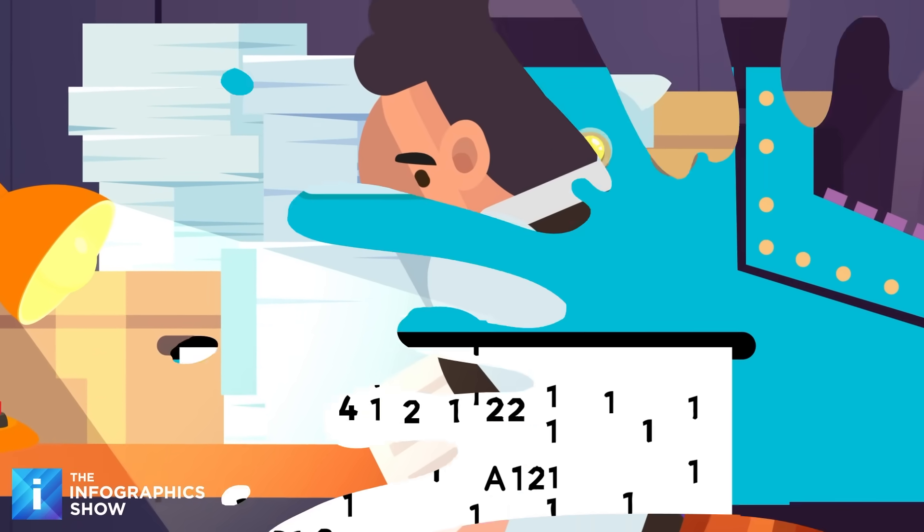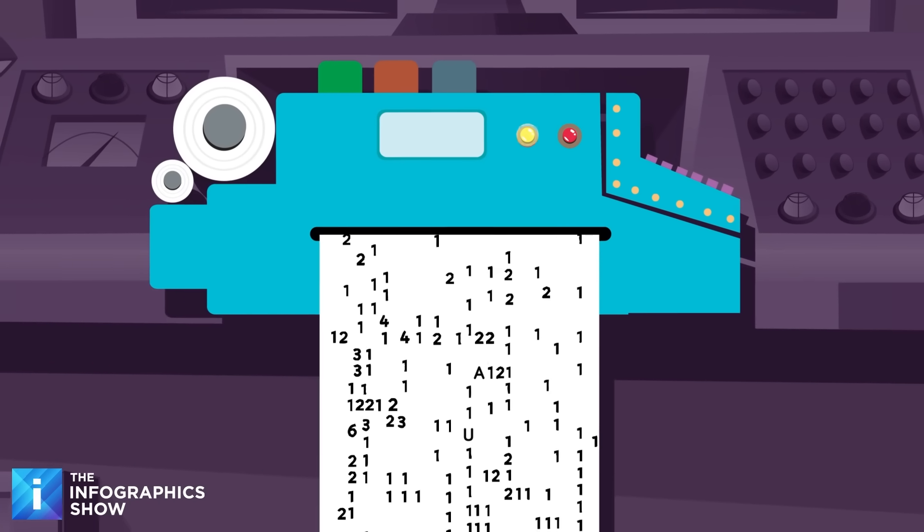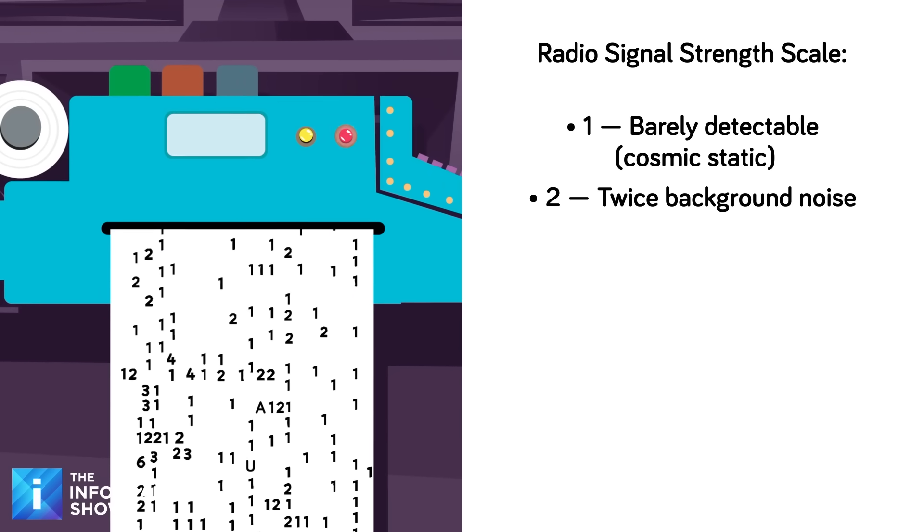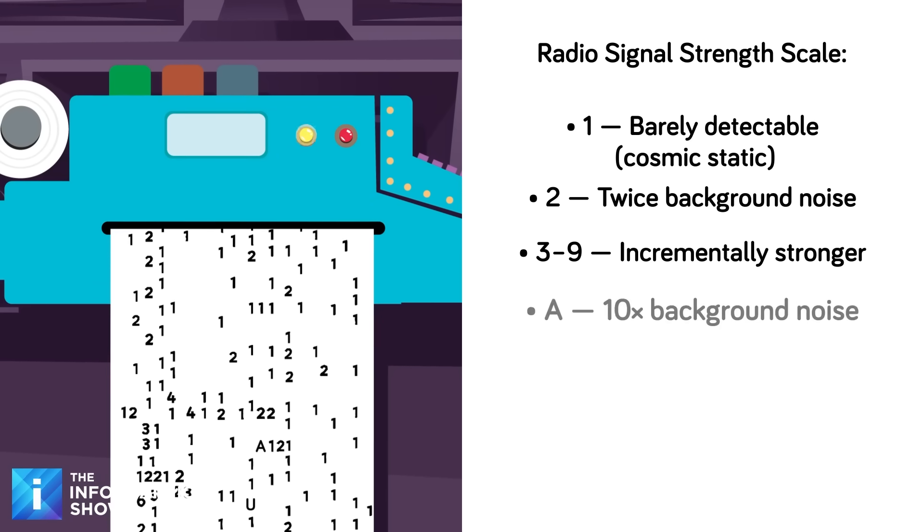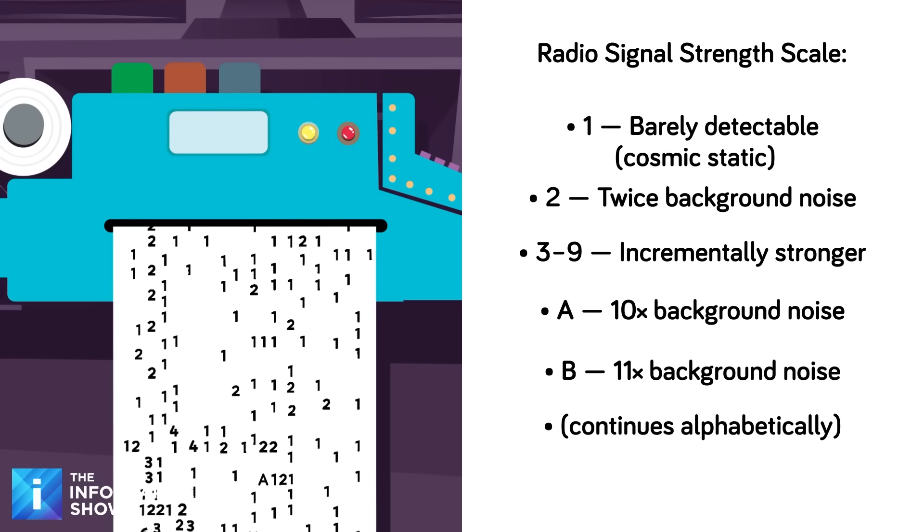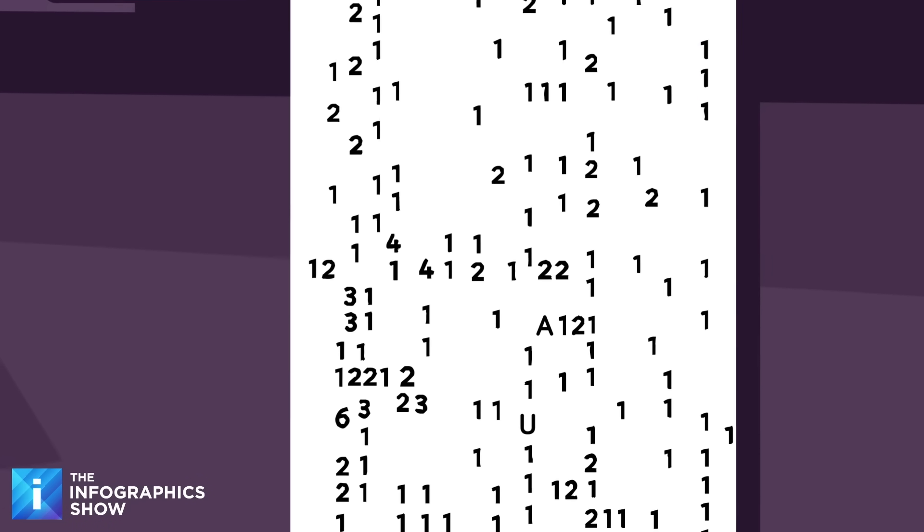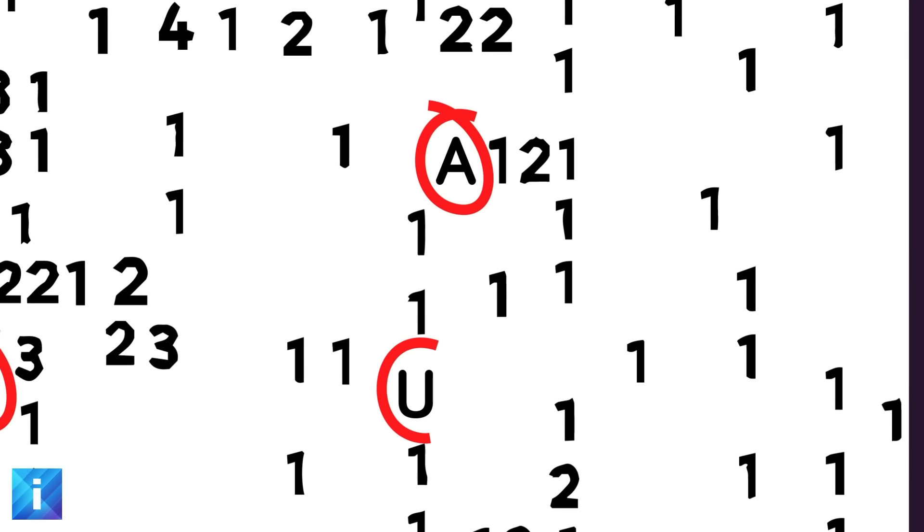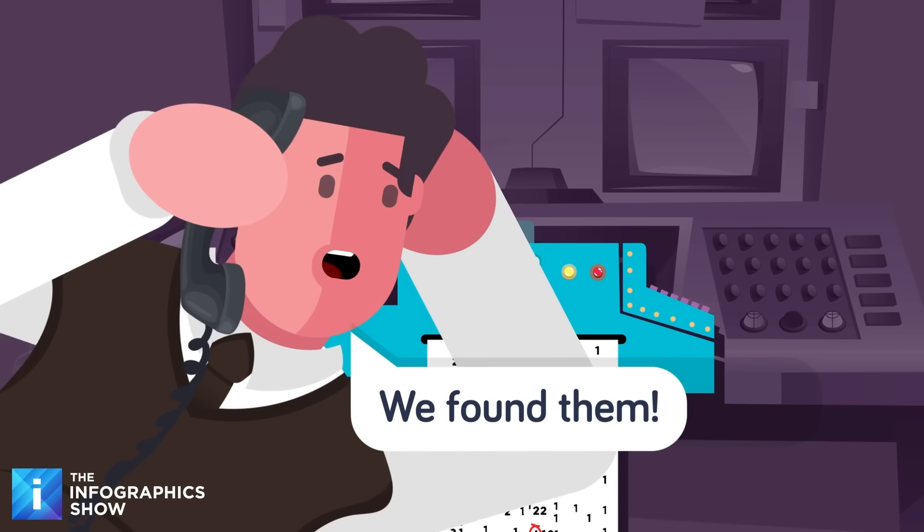The coding system was simple, but tedious. Radio signals were measured against background noise and assigned values. One meant the signal was barely detectable, effectively cosmic static. Two meant it was twice as strong, and so on up through nine. After nine the system switched to letters. A equaled ten times the background noise, B meant eleven times, and so forth up the alphabet. In the endless sea of ones and twos that represented the universe's normal radio chatter, anything above six was noteworthy. Anything reaching letter status was extraordinary, and anything into the middle of the alphabet, that was the kind of anomaly that made astronomers drop their coffee and start double-checking equipment calibrations.